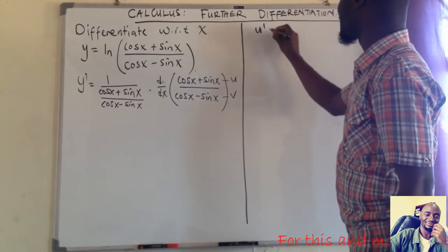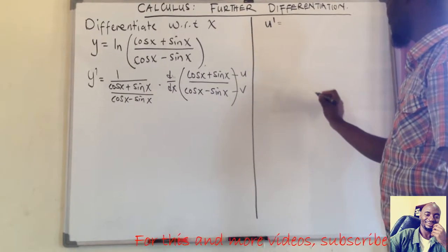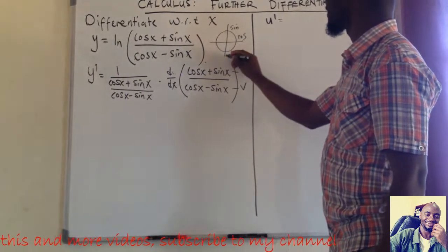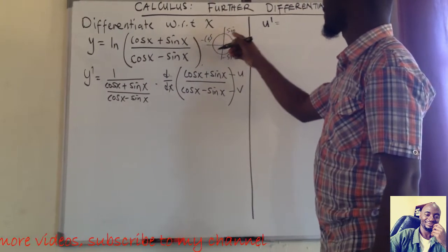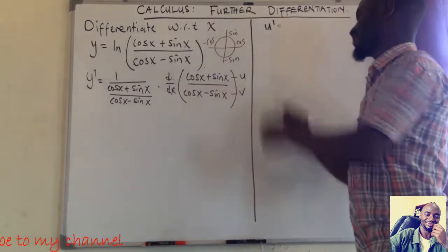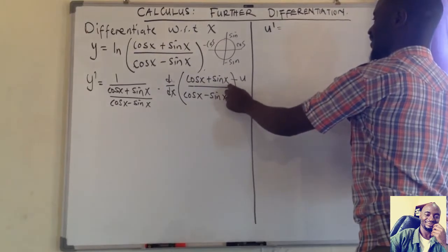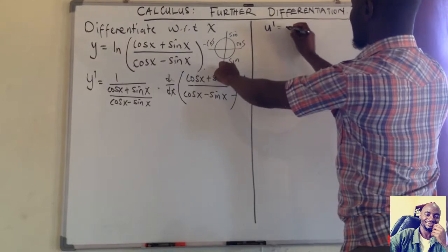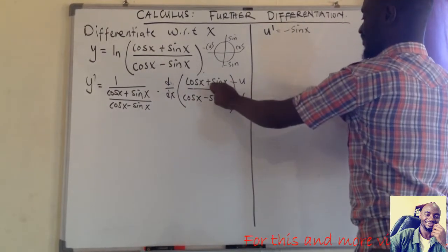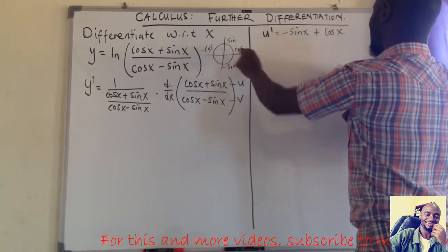So u prime — the derivative of u — we differentiate cos x + sin x. To remember trig derivatives, we use a cycle: sine → cos → minus sine → minus cos, going clockwise. So differentiating cos x gives minus sine x, multiplied by the derivative of x which is 1. Plus the derivative of sine x, which gives cos x. So u prime = minus sin x + cos x.